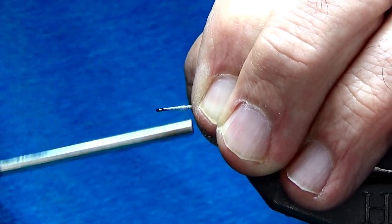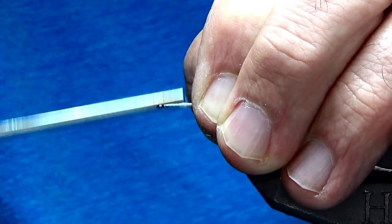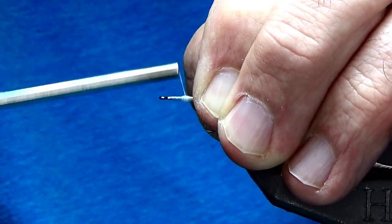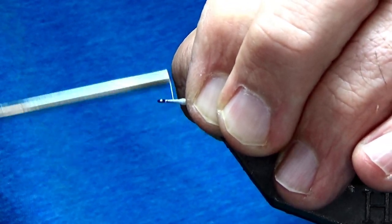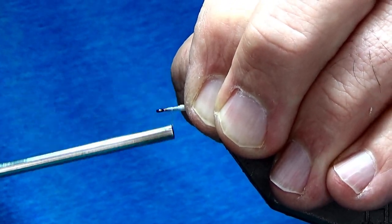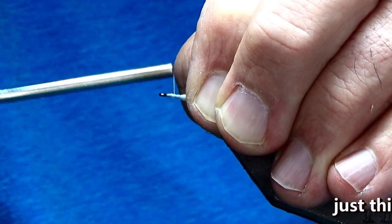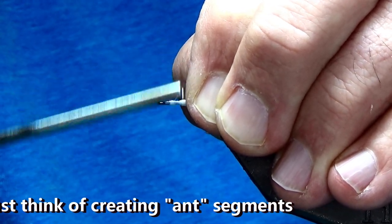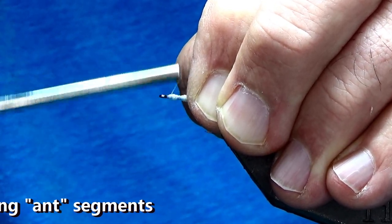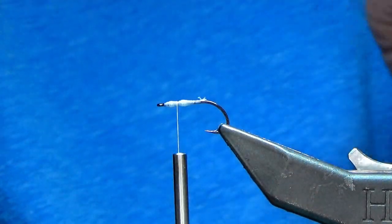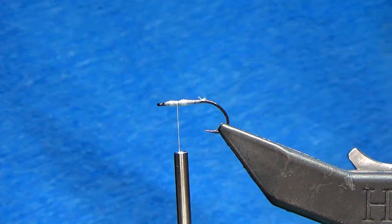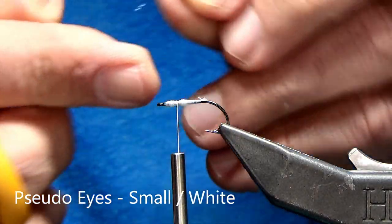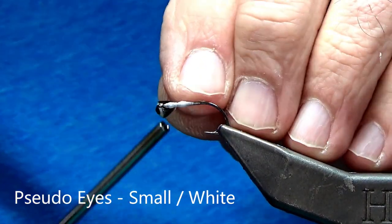But basically what he does is he suggests that you put a bump on the backside of where the eye is going to be. So you can see I've got that there. And then what I've found on these small hooks, just to make sure that everything goes exactly where you want it, is just to use a second bump right in front. I'm just using my Veevus 100 gel spun to do that. And as far as the eyes, I'm using pseudo eyes. They're small and white.